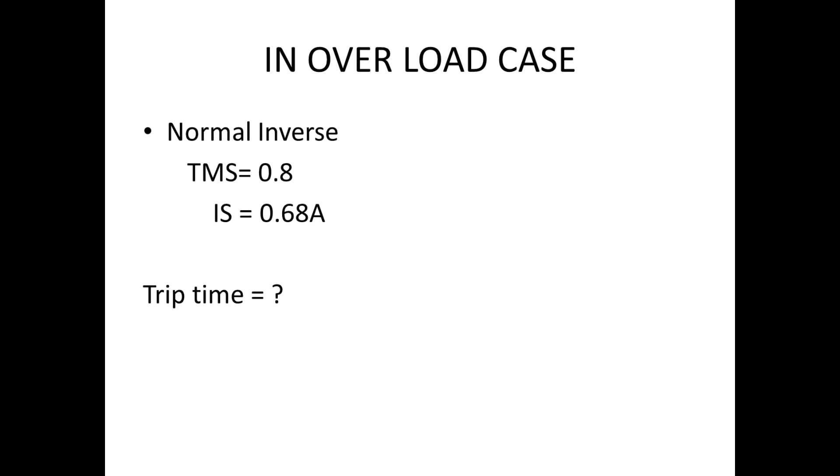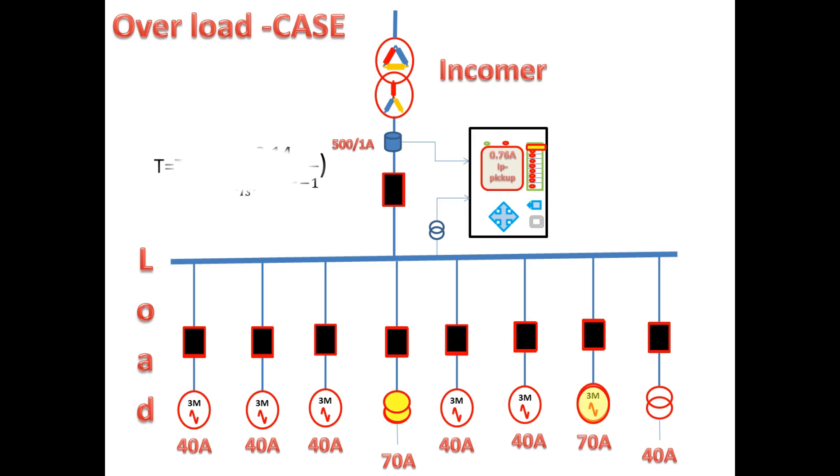In case 1 we got 2 feeders overload. For normal inverse, the formula is this. And from this formula we have all the values. For Ia, we can get from the CT secondary. Here we have 0.76A. If you substitute all these values in the formula, I got 50.29 seconds.